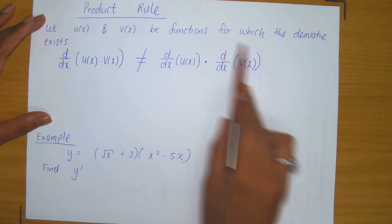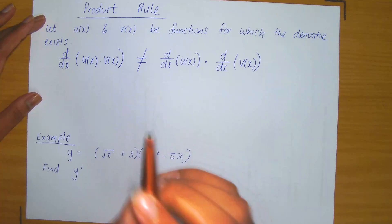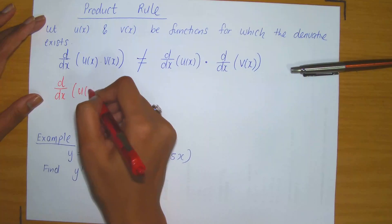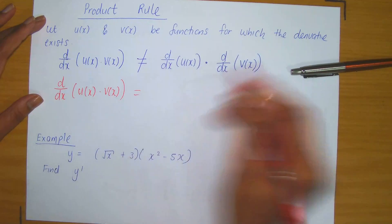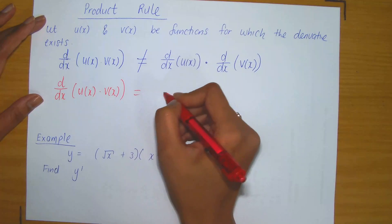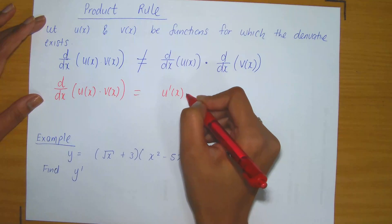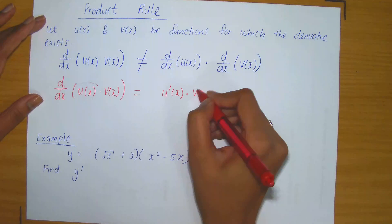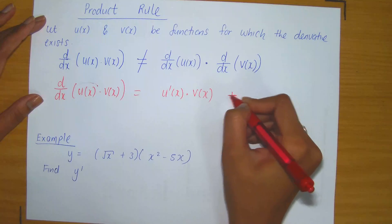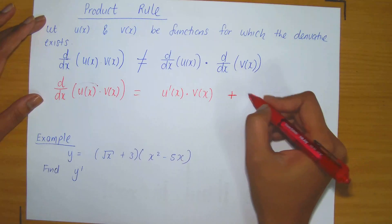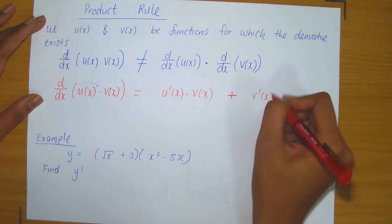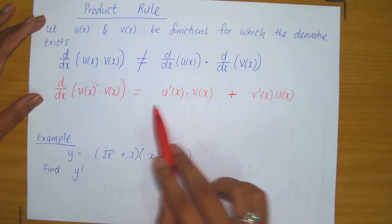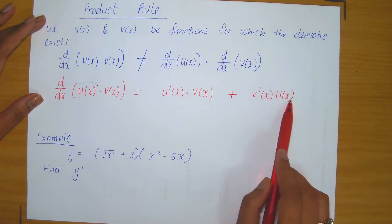So this is not the formula you would use to compute the derivative of the product of two functions. Instead, the derivative of the product of u of x and v of x is equal to the following: you take the derivative of one function — u prime of x — and multiply it to the second function v. Then add to that the derivative of the second function multiplied to the first. Since addition is being used, this is commutative, so it doesn't matter which function you differentiate first.